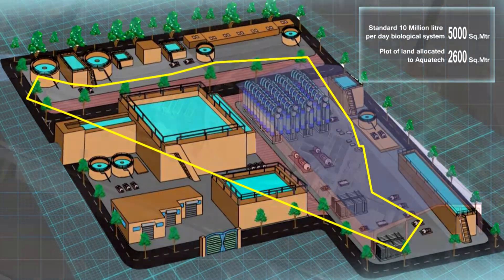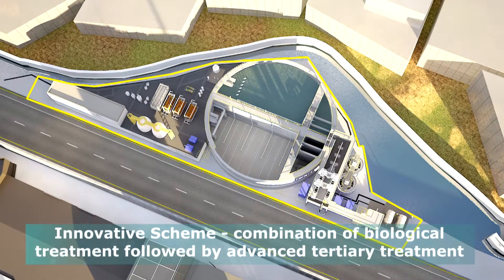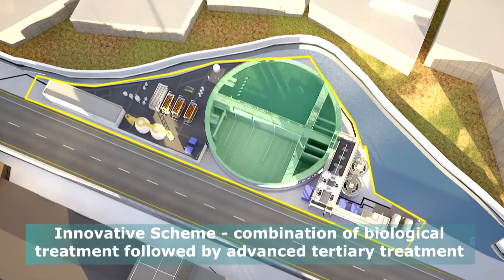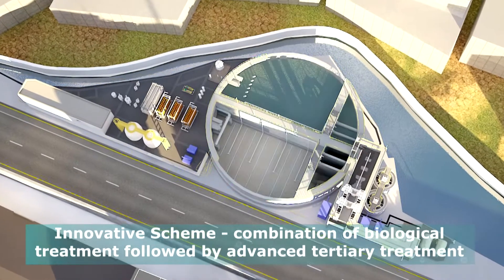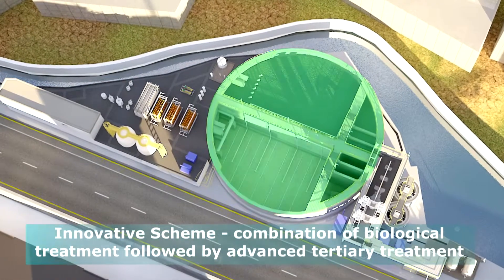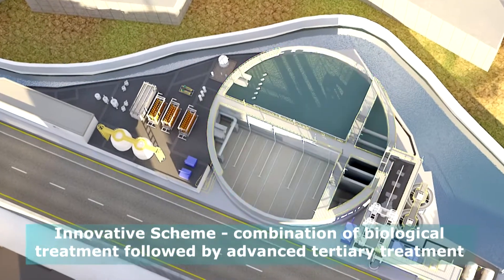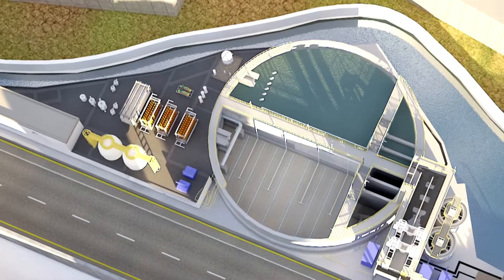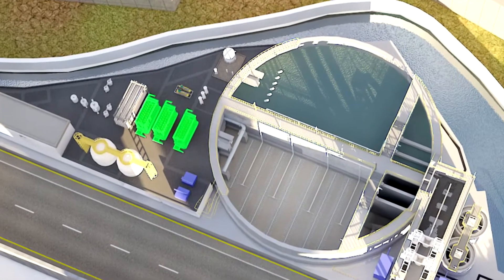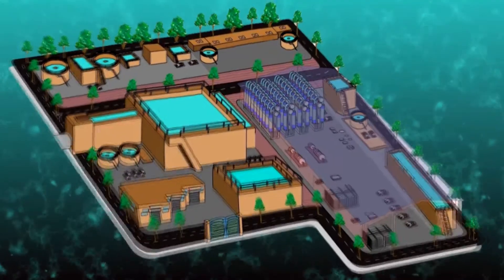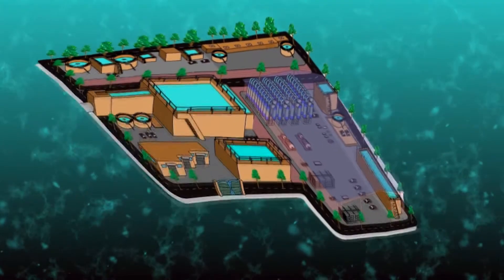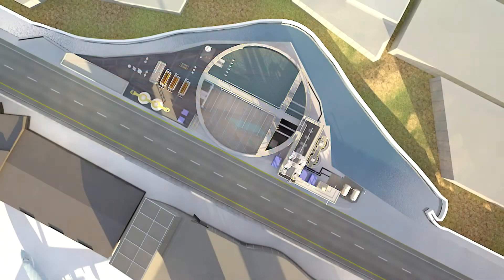AquaTech's configuration consisted of a Cyclic Activated Sludge System (CASS) process, an advanced Sequencing Batch Reactor (SBR) process, media filters, Qua ultrafiltration, and reverse osmosis. The plant configuration had to be skillfully tailored to optimize the odd shape and size of the available land.